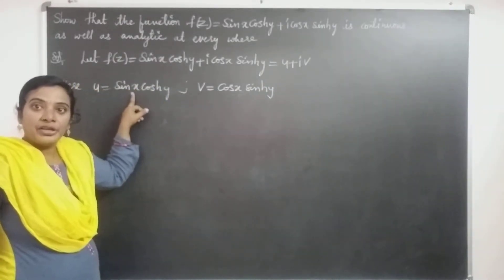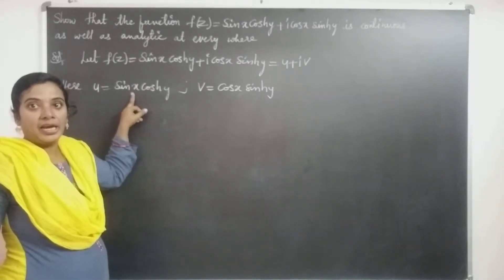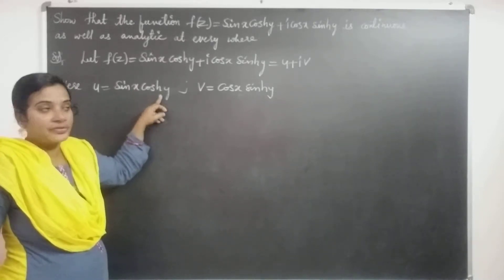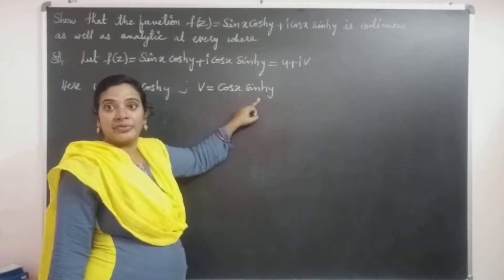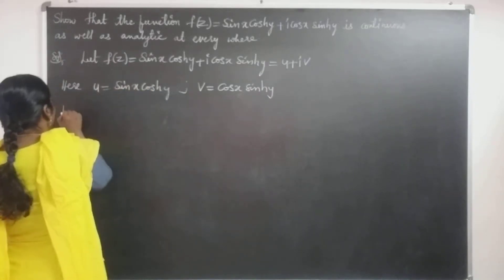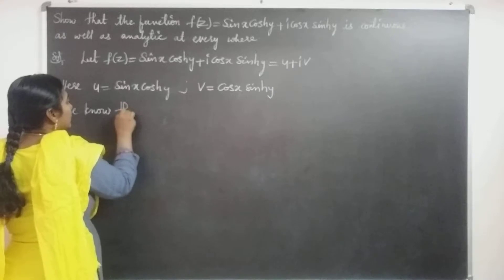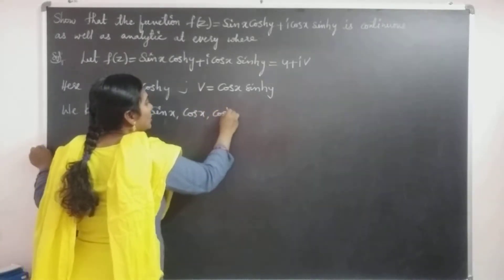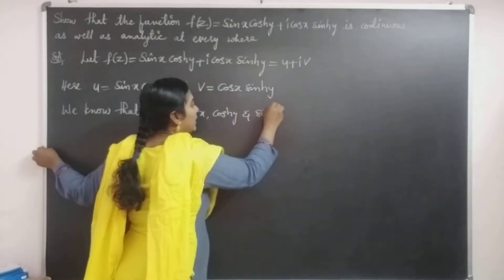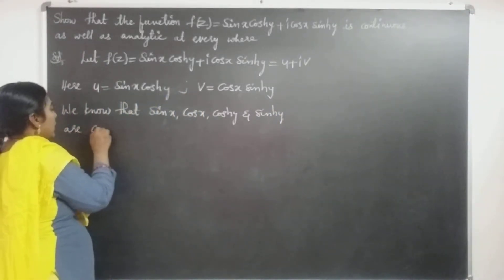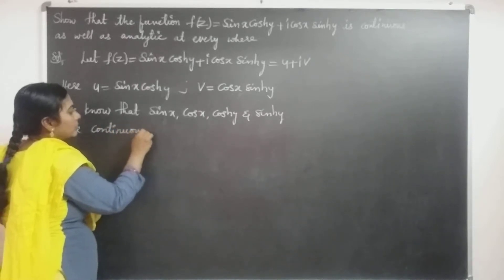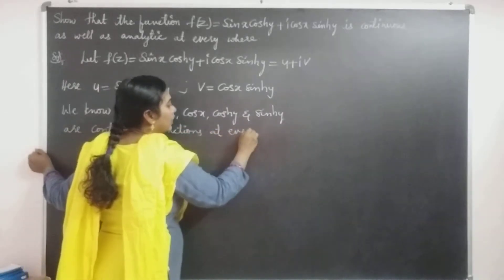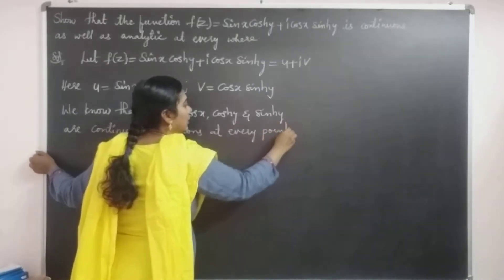We know that sin(x) is a continuous function at every point. It is an oscillating function and thus a continuous function. cosh(y) is also a continuous function. cos(x) and sinh(y) are also continuous functions. We know that sin(x), cos(x), cosh(y), and sinh(y) are all continuous functions at every point.